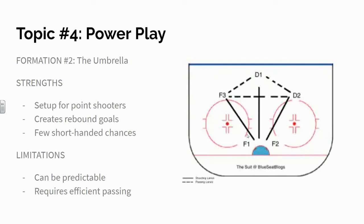Formation number two is called the umbrella, and this is a very common form of power play. Two forwards down low by the goalie, one forward up high, playing with the defenseman from the points to generate lots of shots from the point.